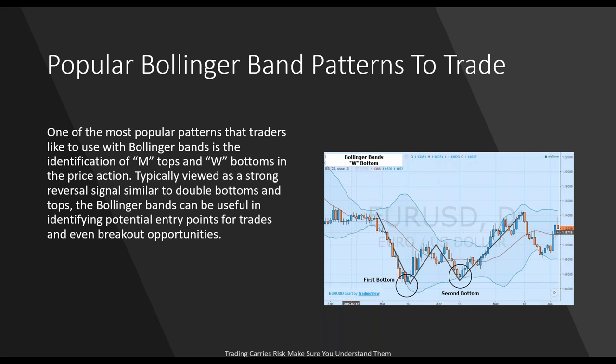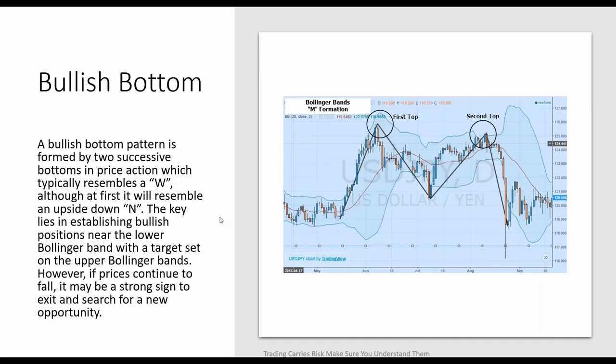The most well-known but perhaps least-used application is the W or M formation. These take a long time to form and may never complete — it's like looking for a head and shoulders pattern. In a downtrend, the first leg forms, the price bounces up and makes a high, comes back down to a second bottom roughly equal to the first, then bounces up. Once price breaks that moving average on the fourth leg, you have a solid W.